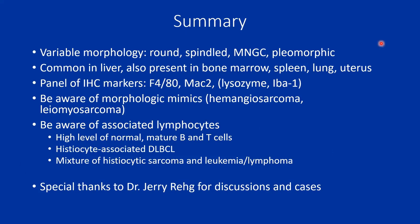An important additional note: F480, when dealing with inflammation, also stains eosinophils — it cross-reacts with eosinophils. So when dealing with inflammation, F480 becomes very difficult because you have endothelial cells that stain with F480, and eosinophils that also stain with F480. It's not a very good marker when dealing with inflammation.